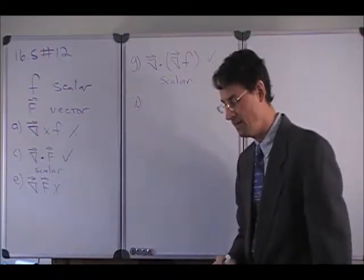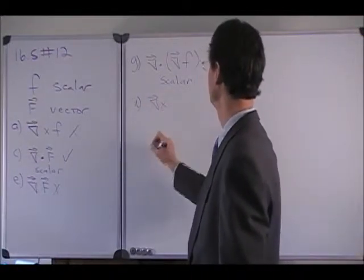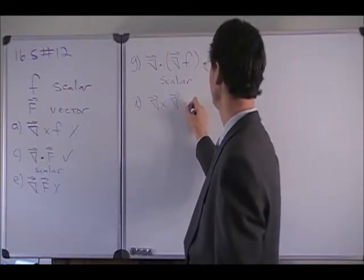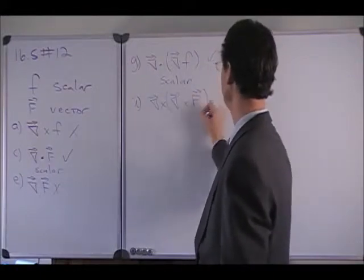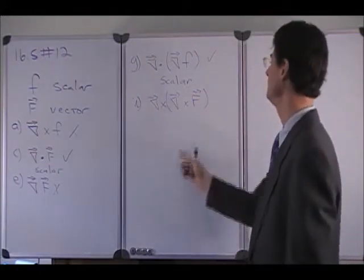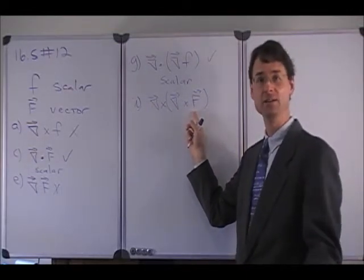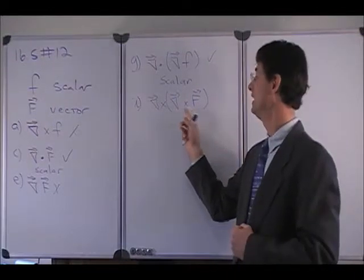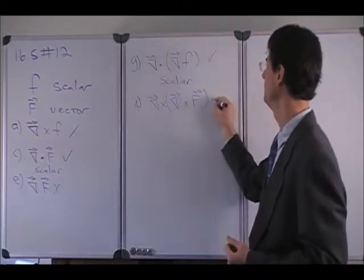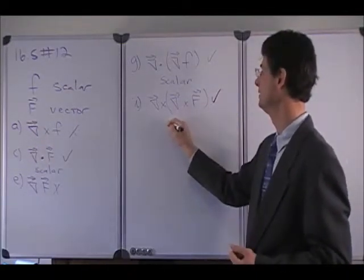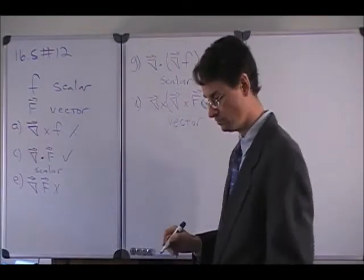Letter I asks: can we take the curl — del cross — of the curl of the vector field F? We have to take some care with our parentheses. The curl of a vector field is allowed, and that yields a vector field. And then can we take the curl of that vector field? Yes, we can. So the curl of a vector field is a vector field.